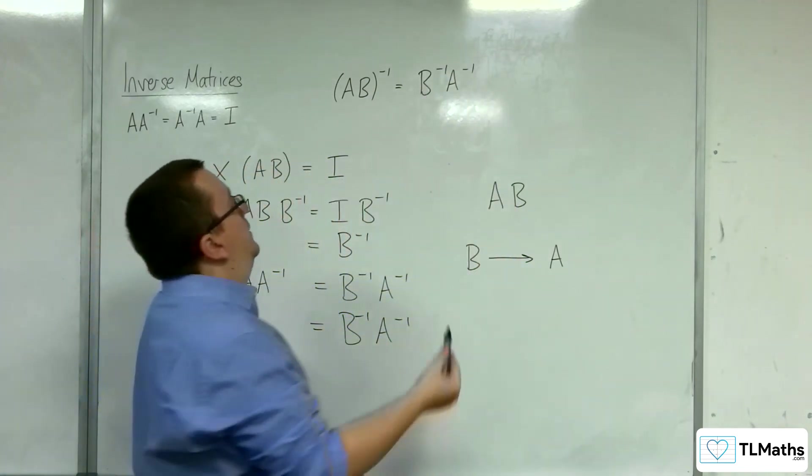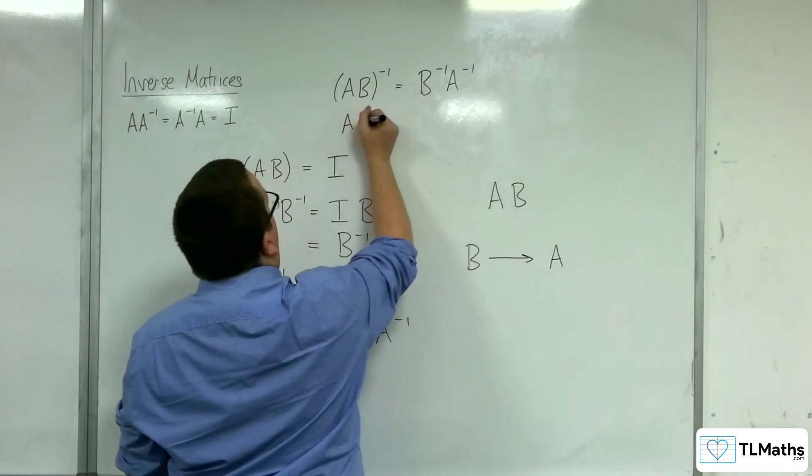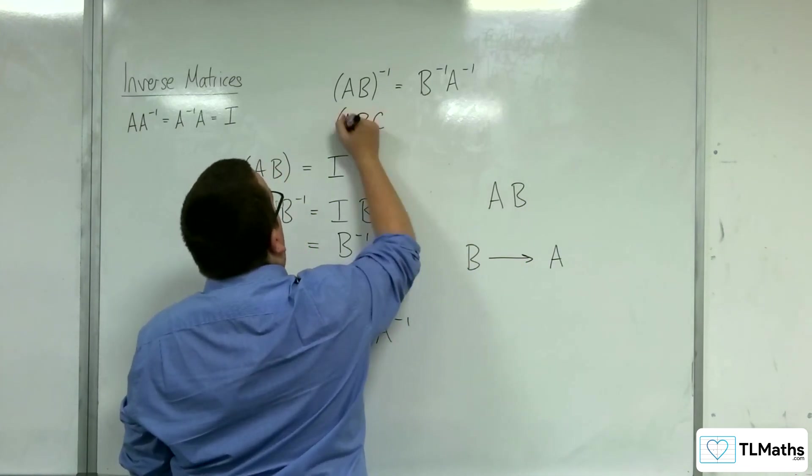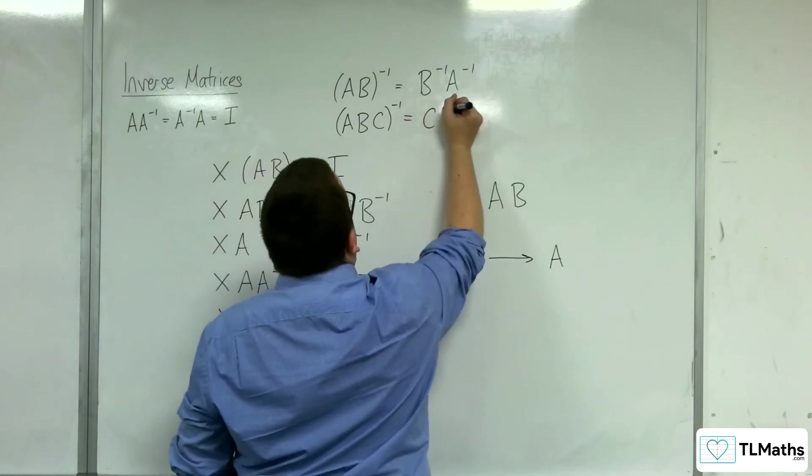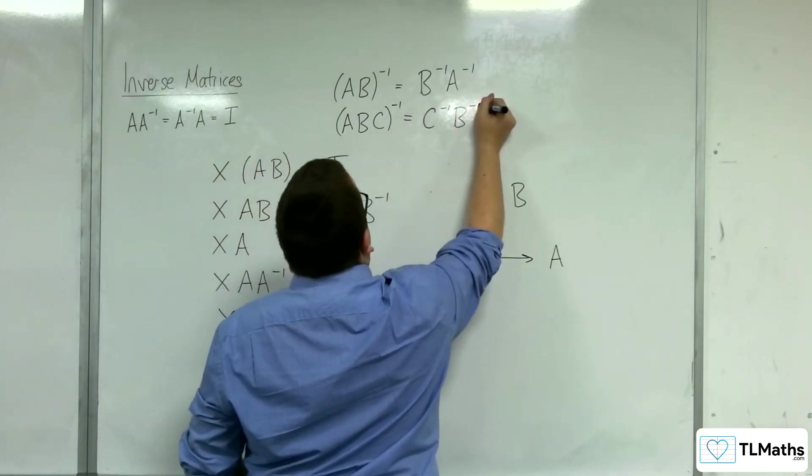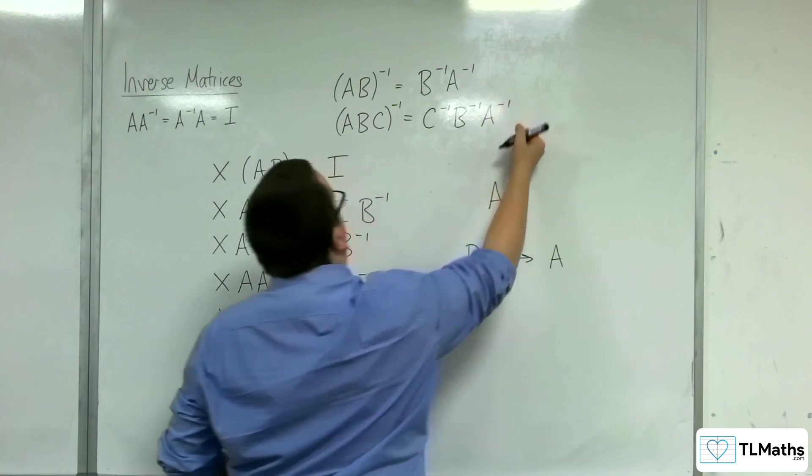So a consequence of this, you know, if you wanted to extend it, if you had A, B, C to the minus 1, you would have to do it this way round.